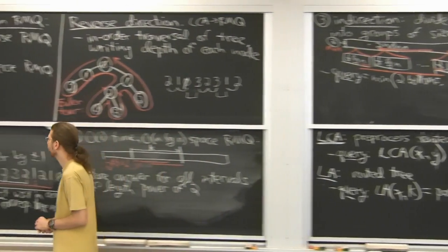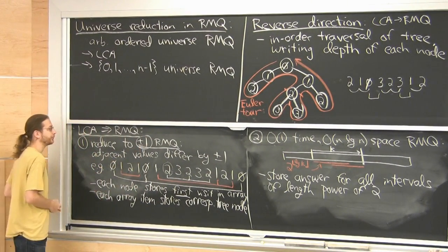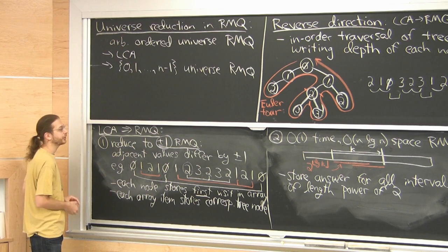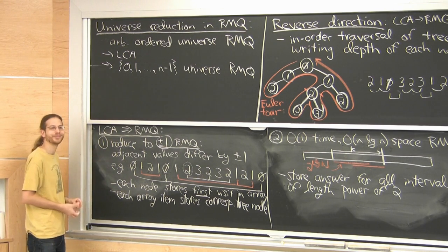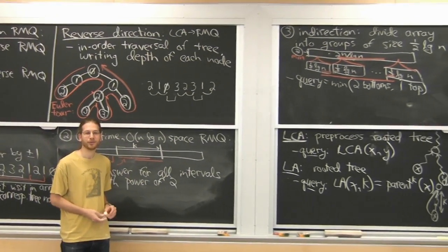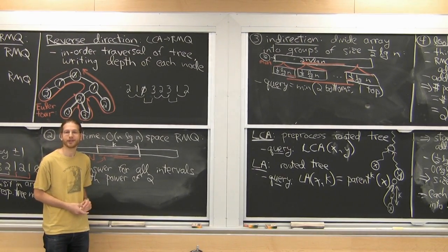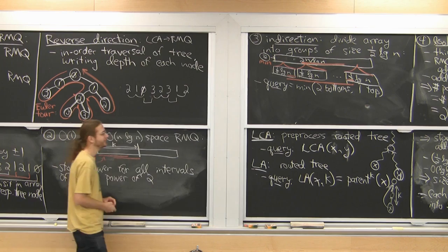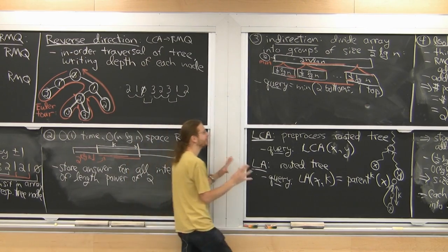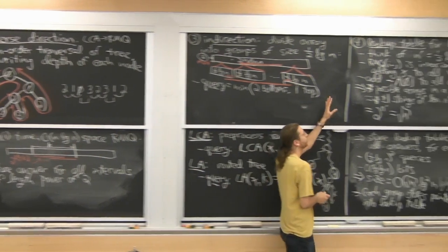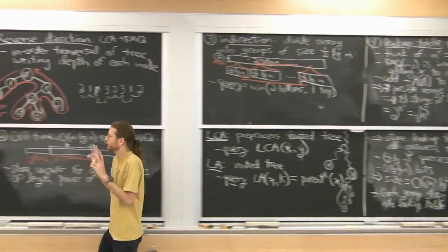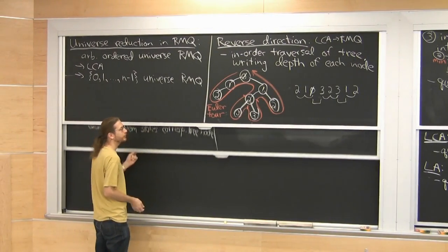So we've now solved two out of three problems. Level ancestors are going to be a little harder — similar number of steps but a little more clever. This RMQ/LCA solution is pretty simple indirection with simple enumeration, but level ancestors will be more sophisticated and more representative of the general case.